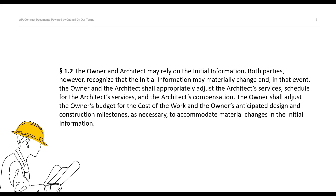The owner is also going to need to adjust its budget, or possibly adjust its design and construction milestones, to accommodate any changes in the initial information. So again, it's the basis of what the entire agreement is premised on. The scope of work defined in the initial information is what the compensation, the schedule, and all of that is based on. So if it changes, the parties need to be aware that they may have to change things as well.